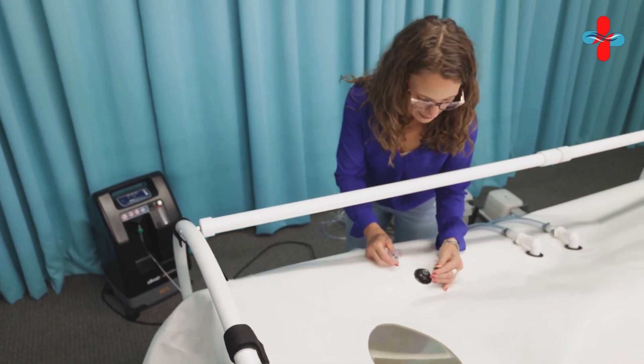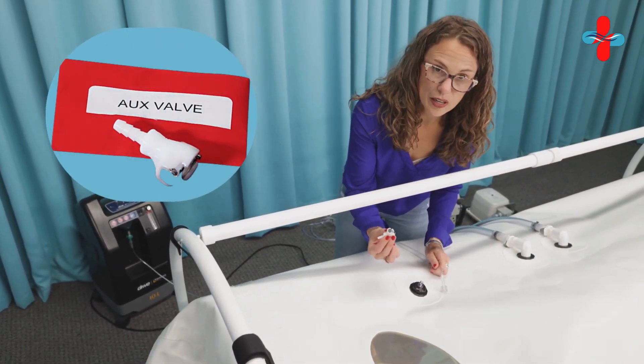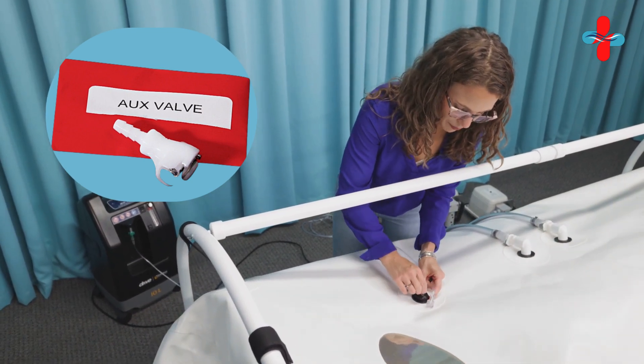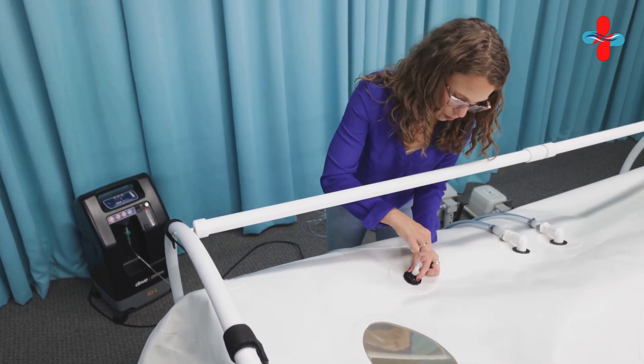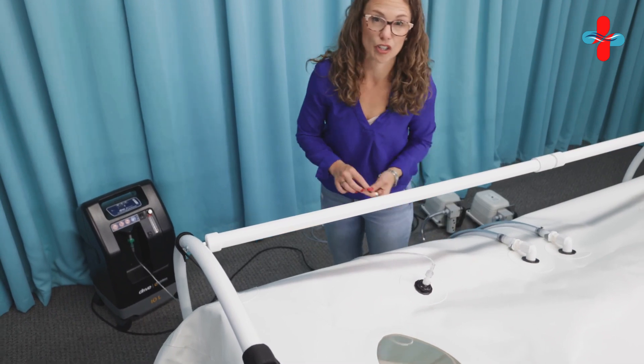You've got this little black cap here. This auxiliary valve comes in a little red envelope. You just take it, pop it right on there, and then you're taking the end of your hose and putting it right on there. And then you're good to go.